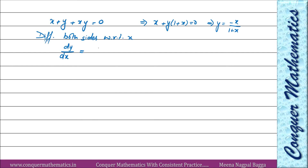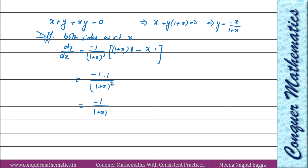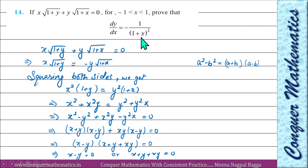Toh aap seedha is expression se dy/dx implicit ki tarah nikalte hain, ya yahan se seedha calculate kar sakte hain. Quotient rule use karna padega. (1+x) denominator mein hai, toh main pehle uska square leta hoon. Ab differentiate karna hai: (1+x) × (minus x ka derivative) minus (−x) × (1+x ka derivative), divided by (1+x)². Yeh hoga: (1+x)(−1) − (−x)(1) = −1−x+x = −1. Toh dy/dx = −1/(1+x)². Yahi prove karna tha.